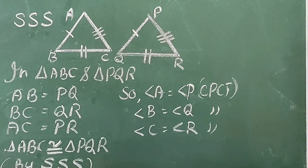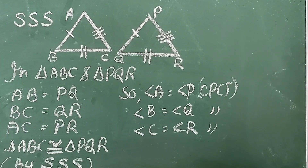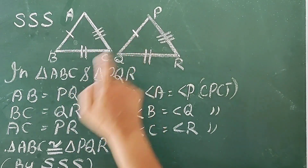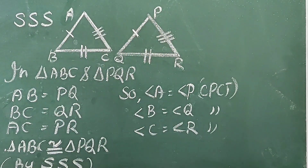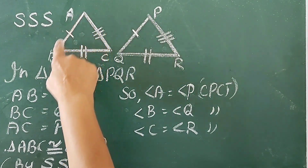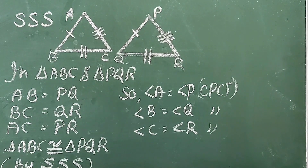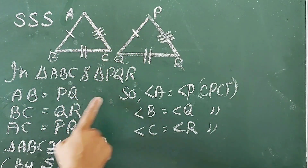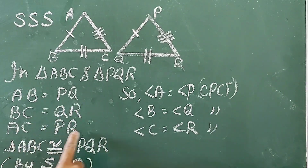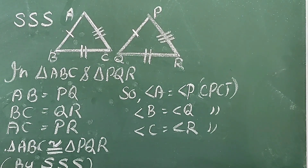SSS condition: If three sides of a triangle are equal to the corresponding three sides of another triangle, then the two triangles are congruent. This is known as SSS congruence. Let us consider two triangles: triangle ABC and triangle PQR. Given: side AB equal to PQ, BC equal to QR, AC equal to PR. Therefore, triangle ABC is congruent to triangle PQR by SSS congruence.